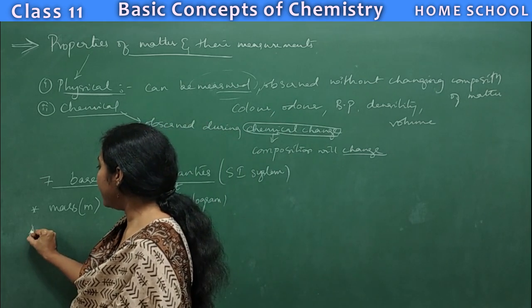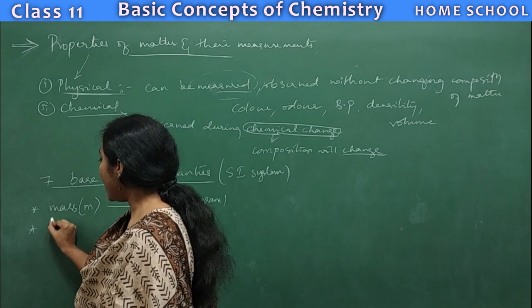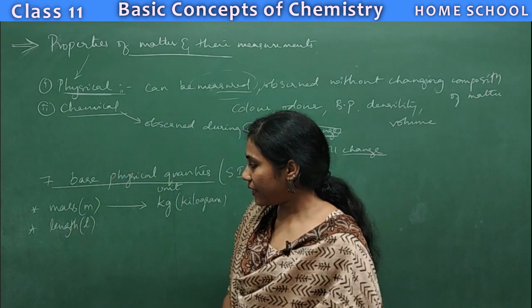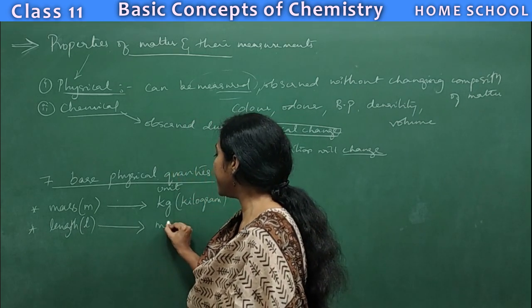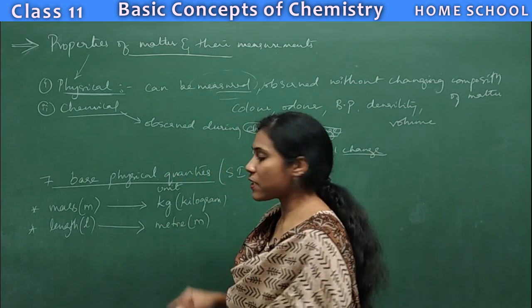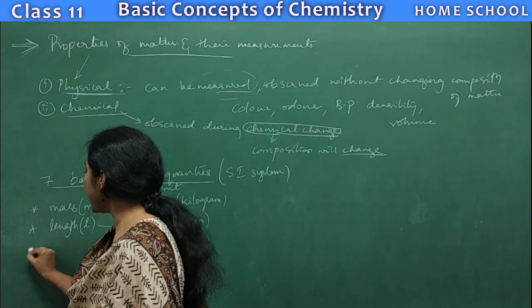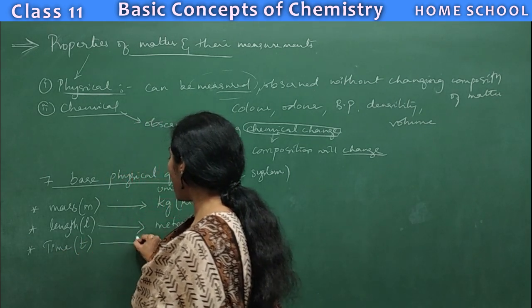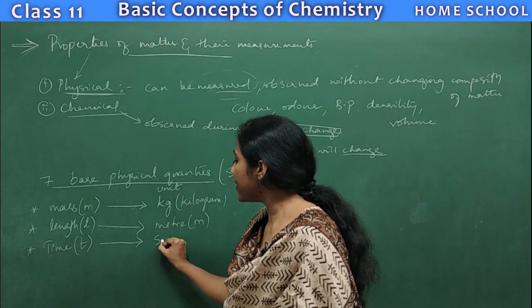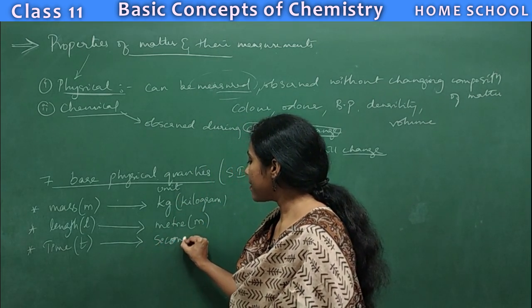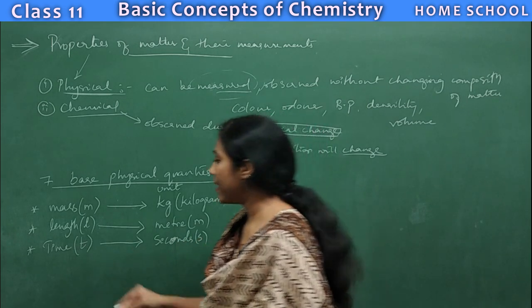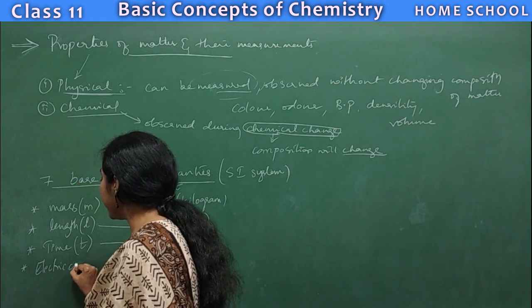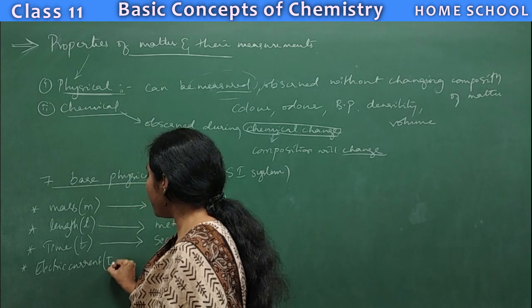The second physical quantity is length, indicated with small l, and its unit is meter, indicated with small m. The next one is time, another base quantity indicated with small t, and its unit is seconds, indicated as small s.